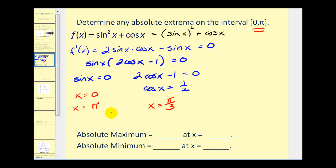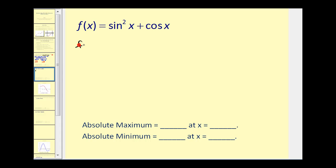Remember, we're only considering values of x on the interval from zero to pi. Now we need to evaluate the function at these critical numbers and the endpoints. Notice that the critical numbers zero and pi are the endpoints on the interval. Therefore, we only need to evaluate the function at three values: f of zero, f of pi over three, and f of pi.